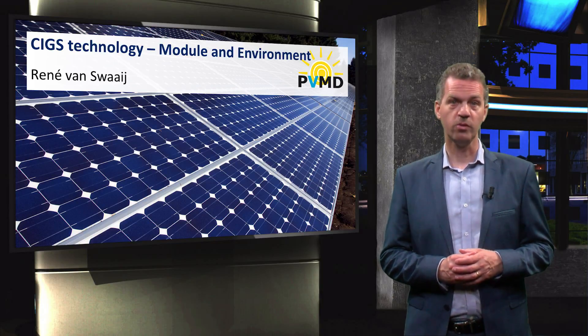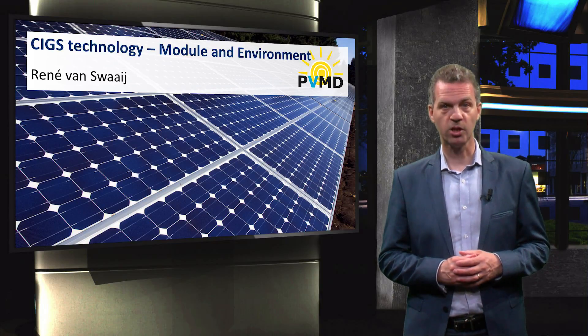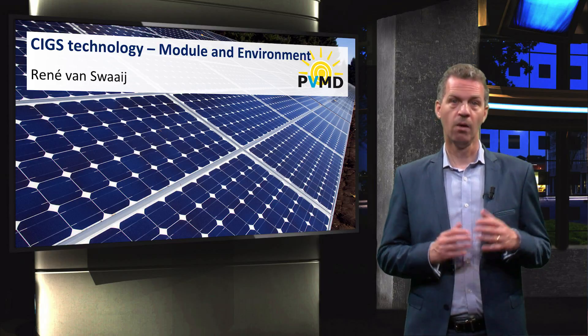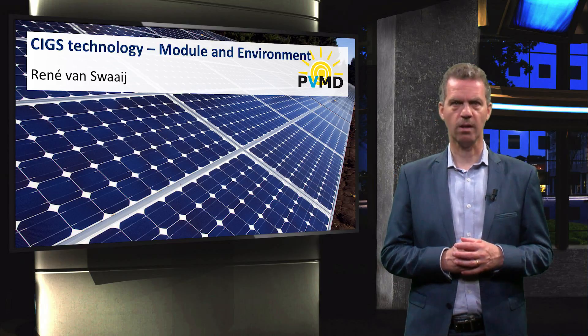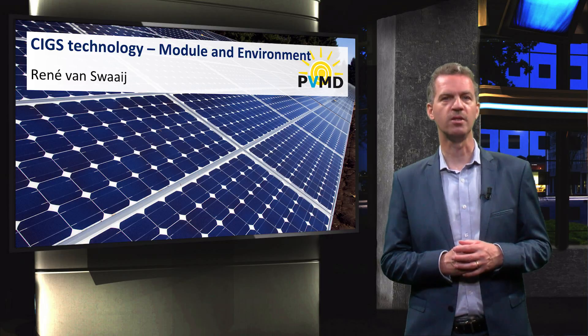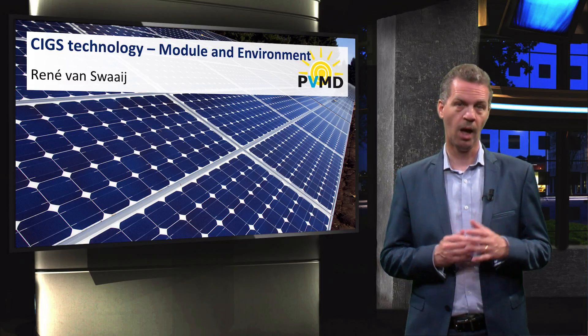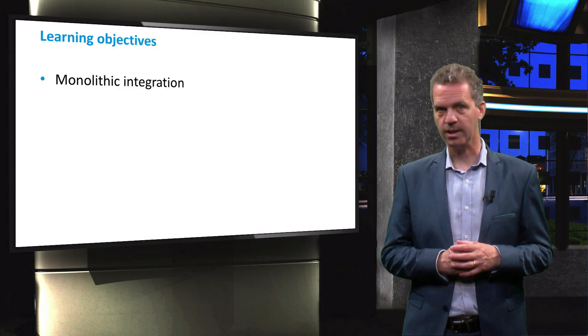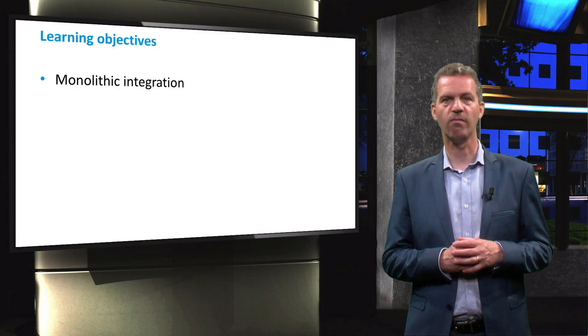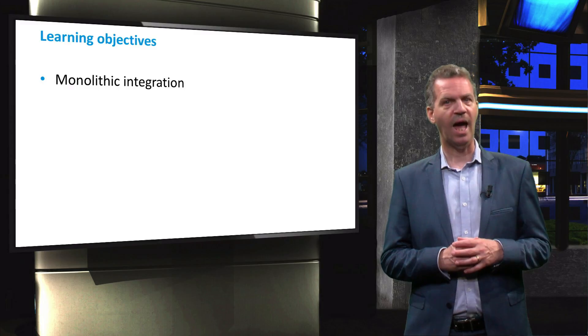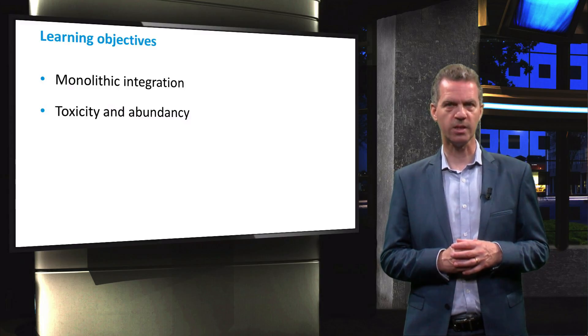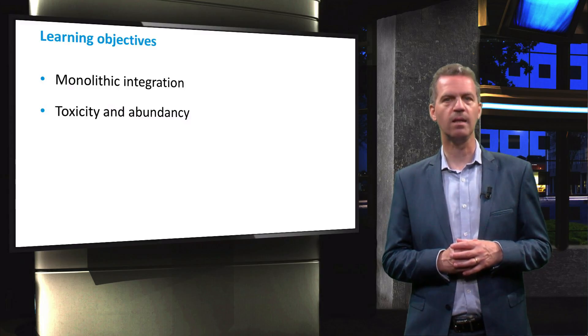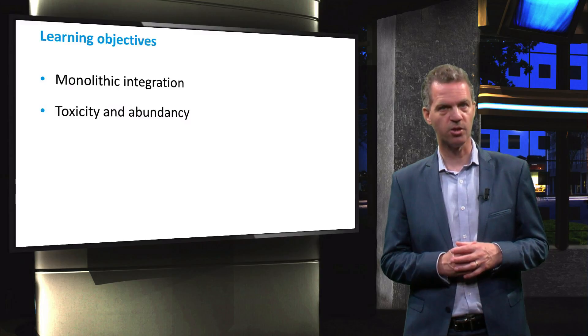In the previous videos we have introduced CIGS for the production of thin film solar cells. We have discussed two different deposition approaches and the traditional cell structure. In this video we will show how cells are most commonly interconnected in solar modules by means of monolithic integration, and secondly we will discuss the toxicity and the abundance of the elements required for CIGS solar modules.